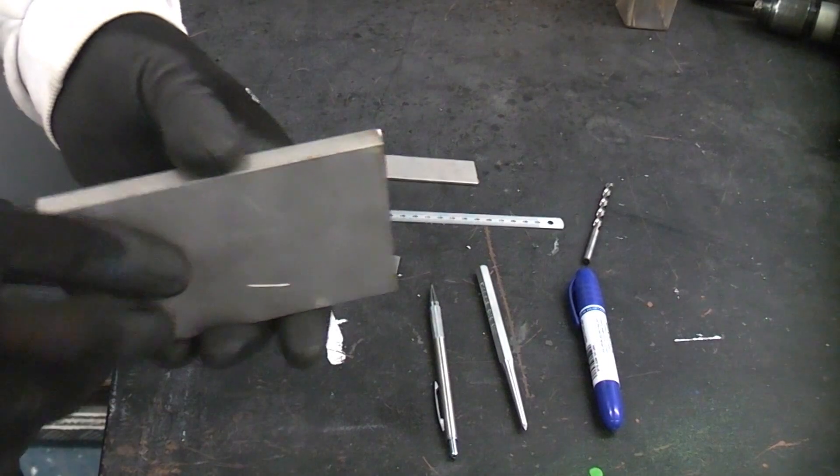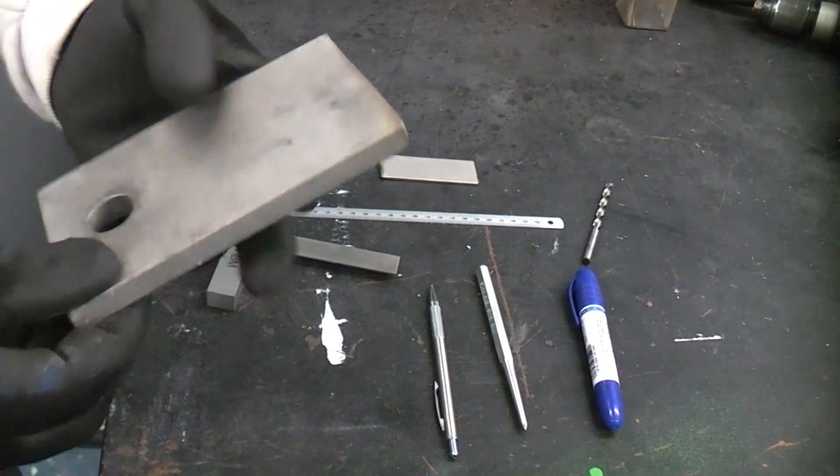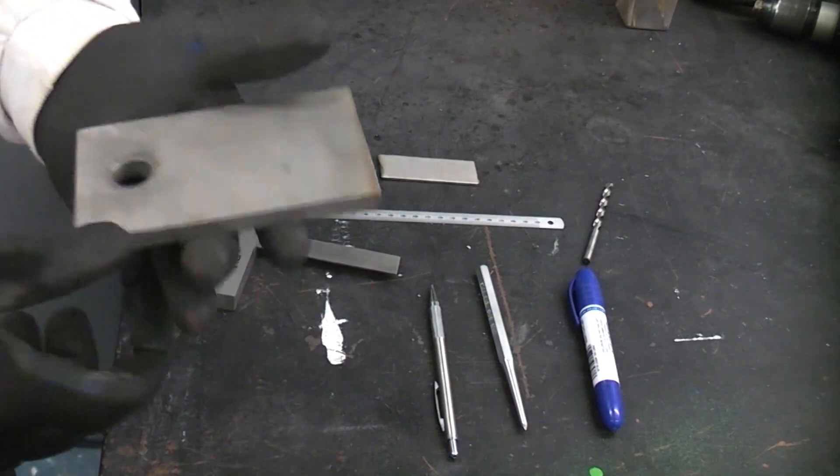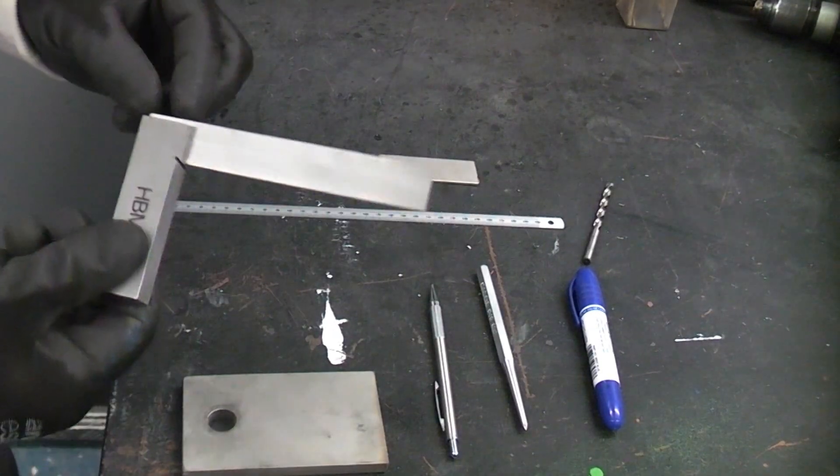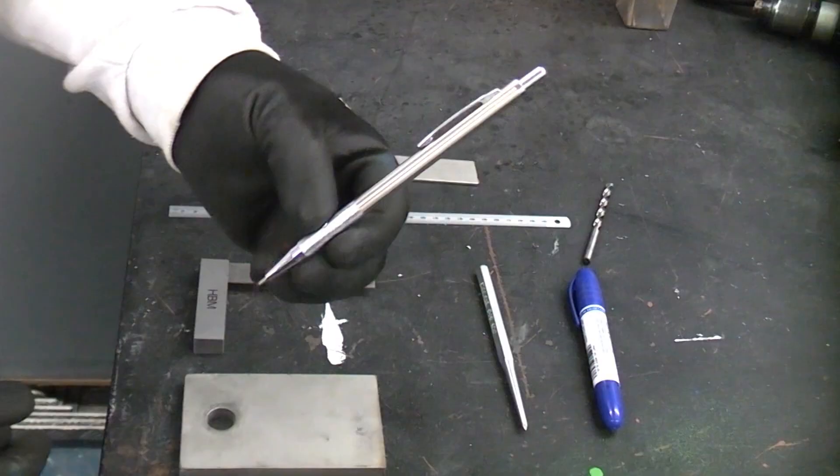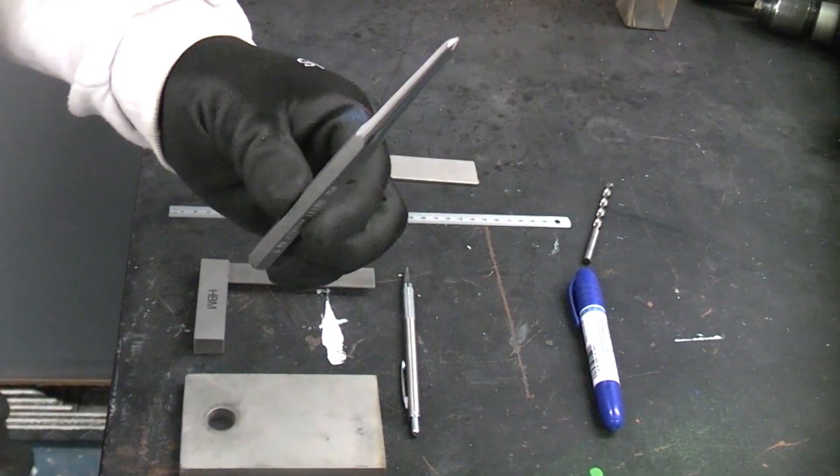I'm now going to mark out this piece of metal which is 10 millimeter thick stainless steel. You're going to need a few tools to mark it out: an engineer's square, a ruler, a scriber and a center punch.